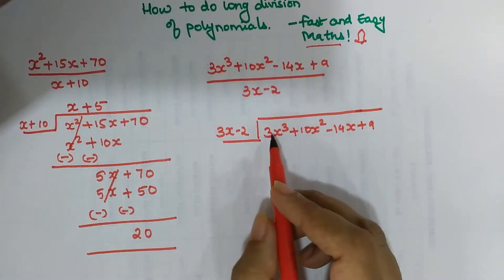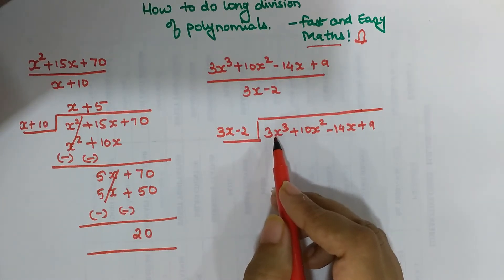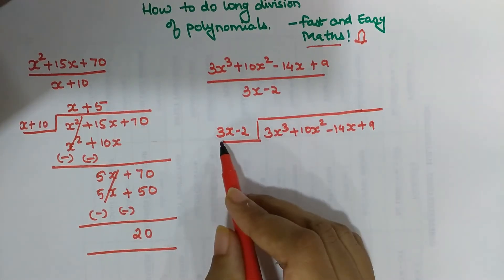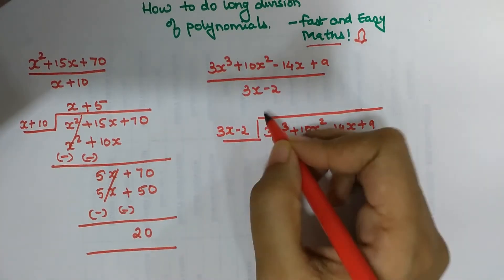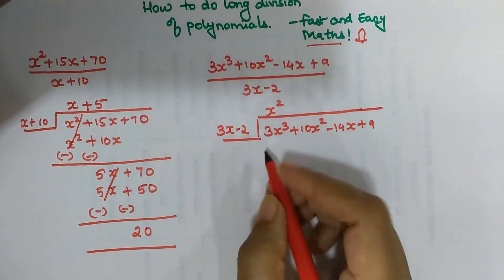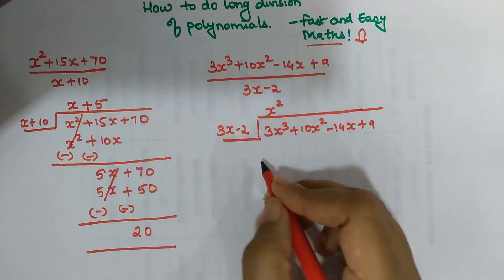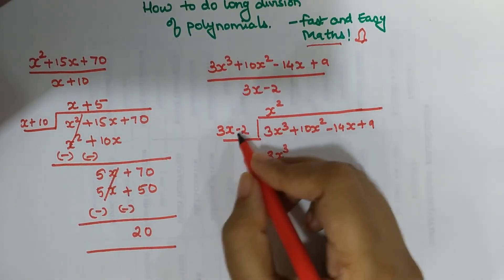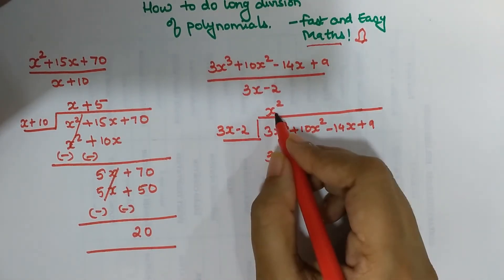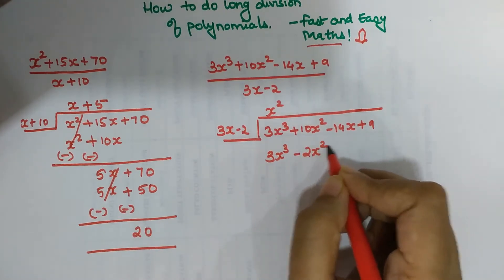The first term in the dividend is 3x cubed, so I need to make 3x become 3x cubed. I will multiply by x squared. When I multiply 3x by x squared I get 3x cubed, and negative 2 multiplied by x squared gives minus 2x squared.